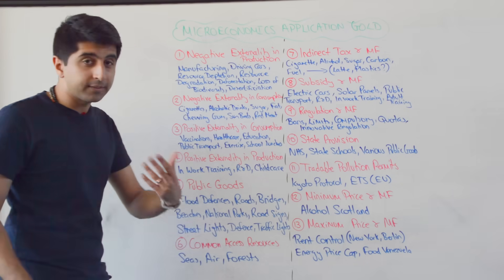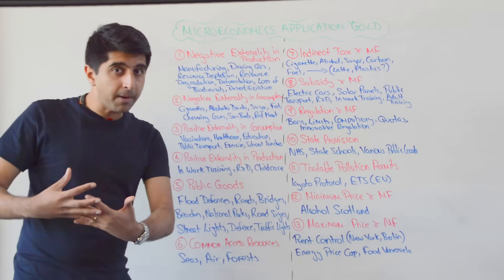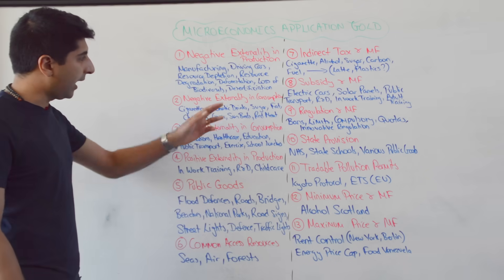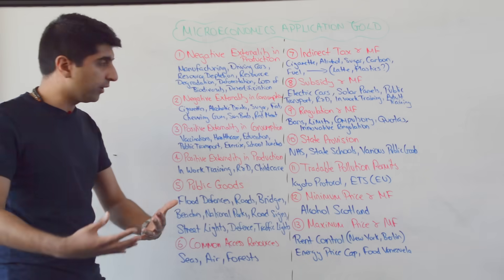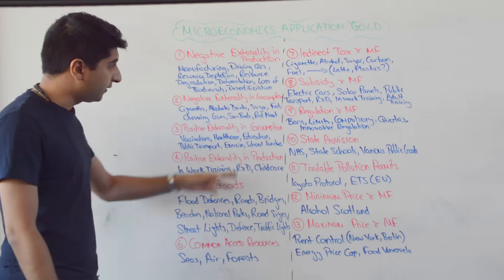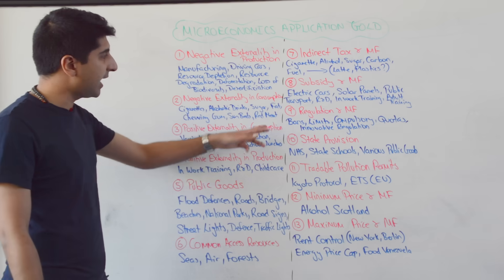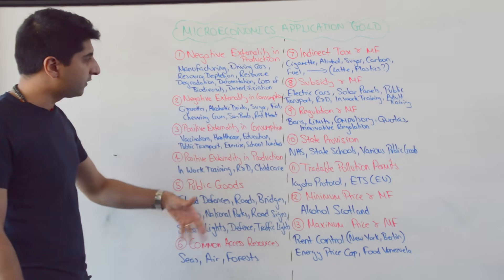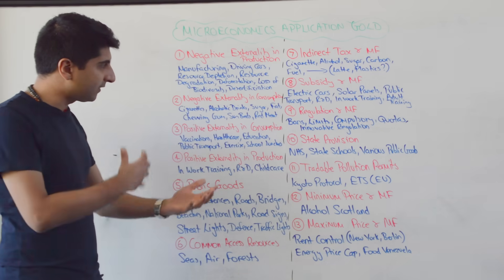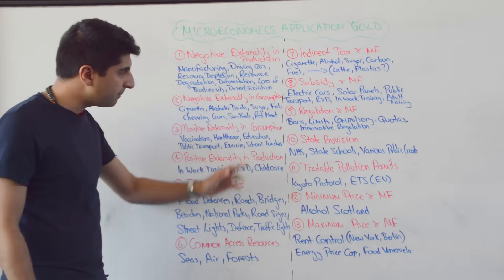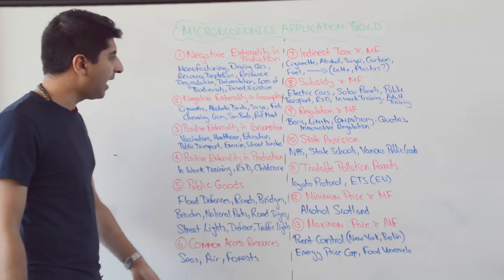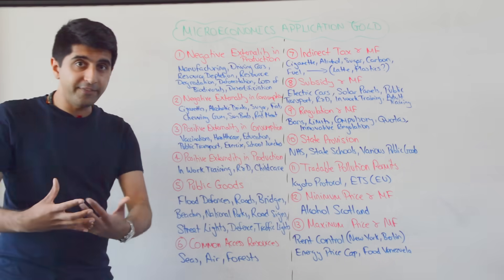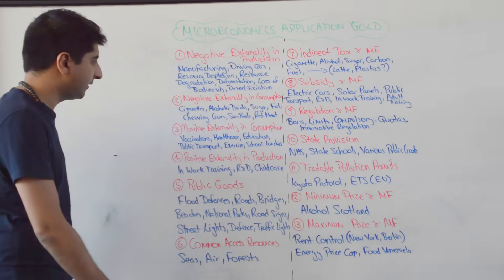What about negative externalities in consumption — i.e. demerit goods? When we smoke cigarettes, engage in excessive alcoholic drinking, excessive sugar intake, fat intake, chewing gum and dropping it on the streets, sunbeds and the link to skin cancer, red meat — these are all good examples. Excessive consumption of these things will generate significant negative externalities.